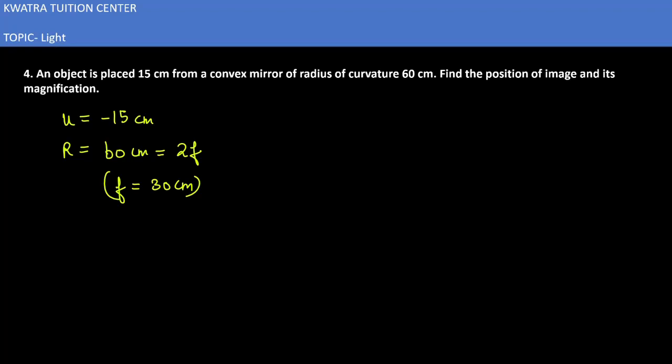Because we need to find v, for v we need to use a formula. 1 over f is equal to 1 over u plus 1 over v.